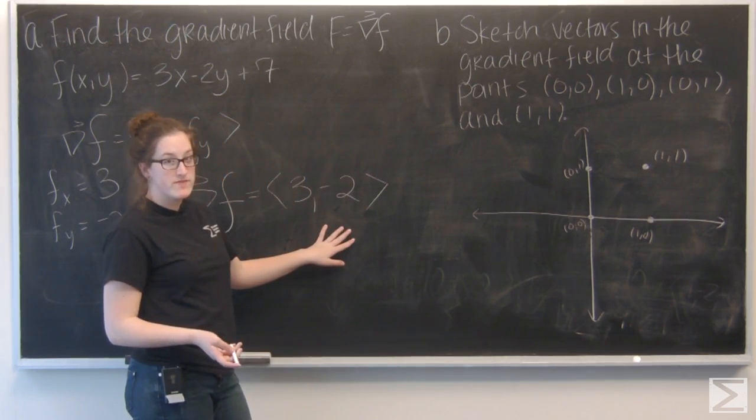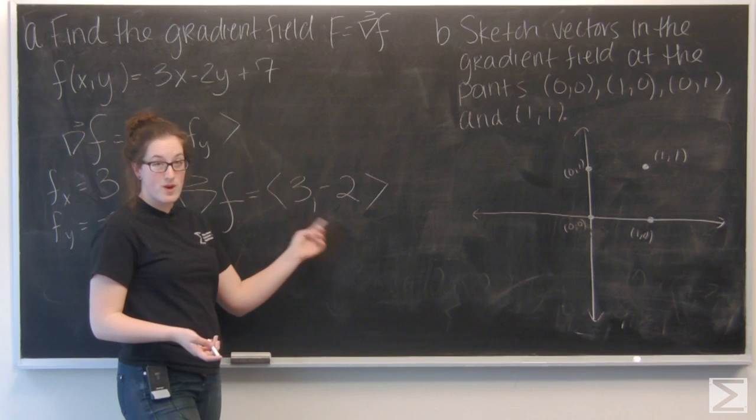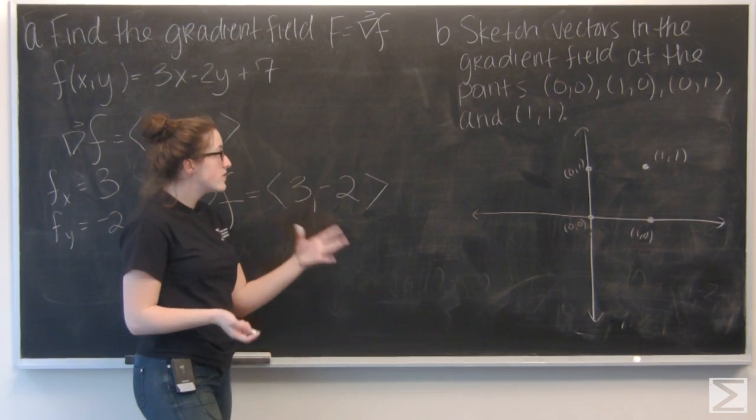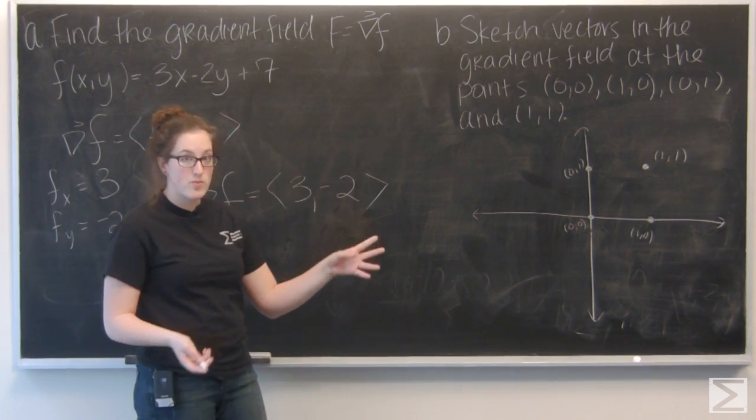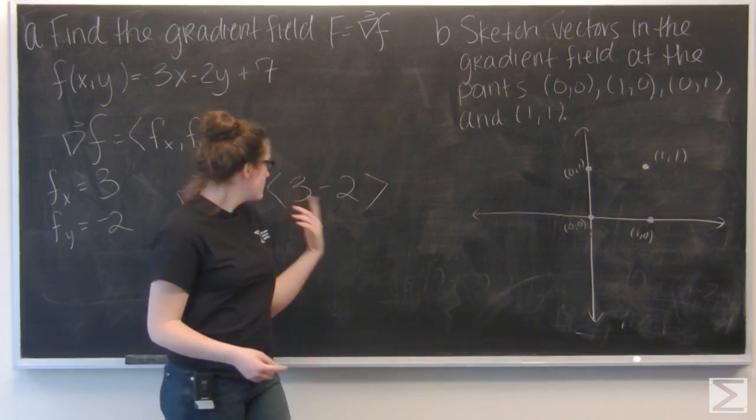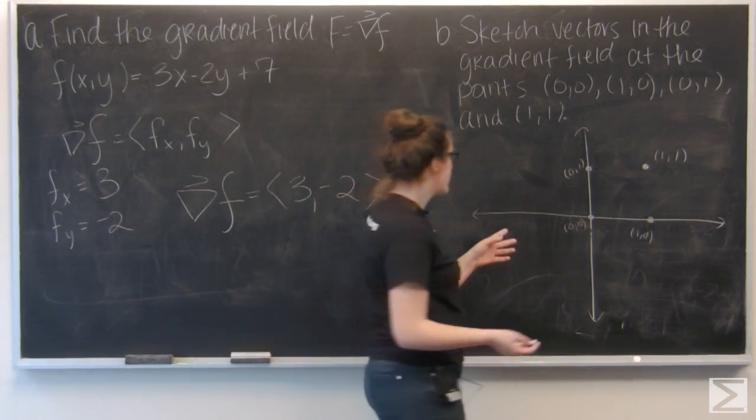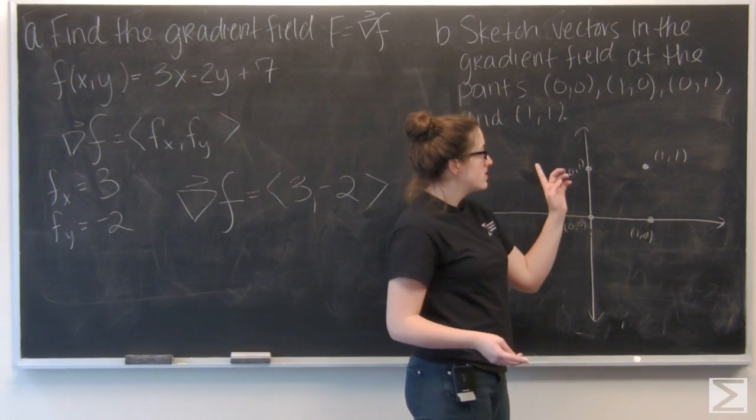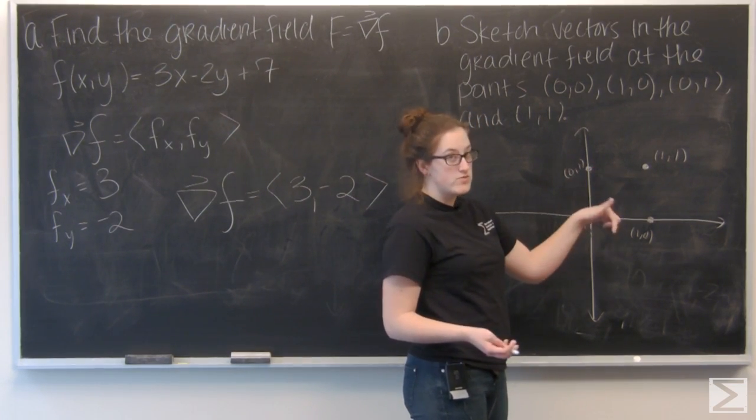I actually have a constant gradient for this function - I don't have any x's or y's. So the gradient vectors are the same no matter what point you're at. Let's draw one of the vectors. I want to go right 3 units and down 2 units.